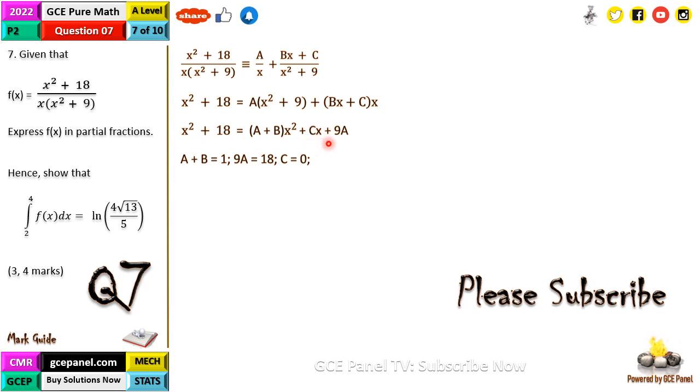The coefficient of x on the right hand side is c. There is no term in x on the left hand side, this implies that c equals 0.